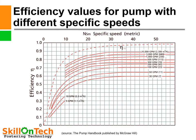A graph of efficiency of pumps with respect to specific speed is shown. This picture clearly shows that high efficiency can be achieved in all three kinds of impellers. Above approximately 20 Ns in metric specific speed, the curve becomes flatter, indicating that the best efficiency point can be achieved across all three impeller types.